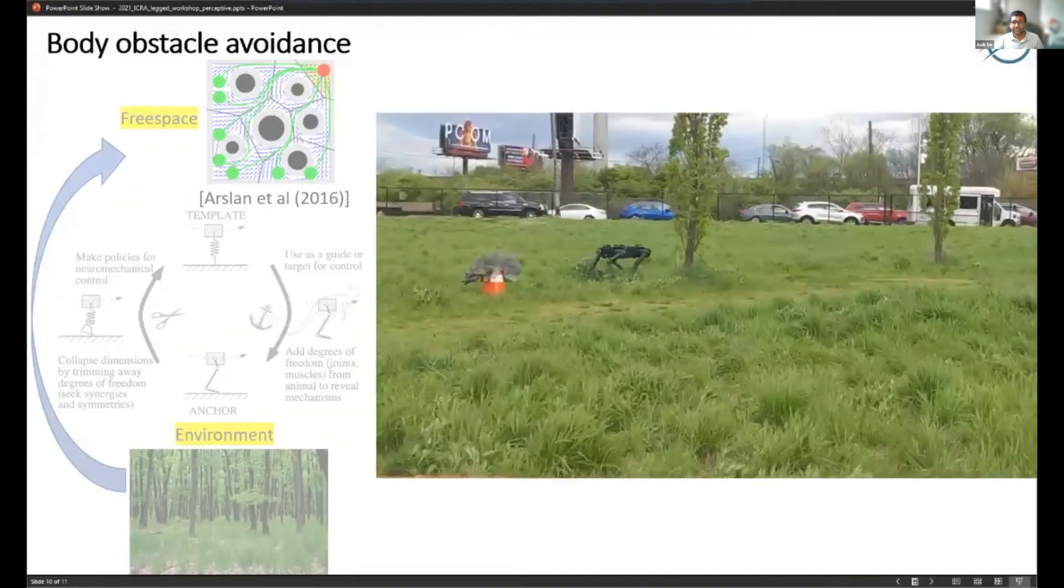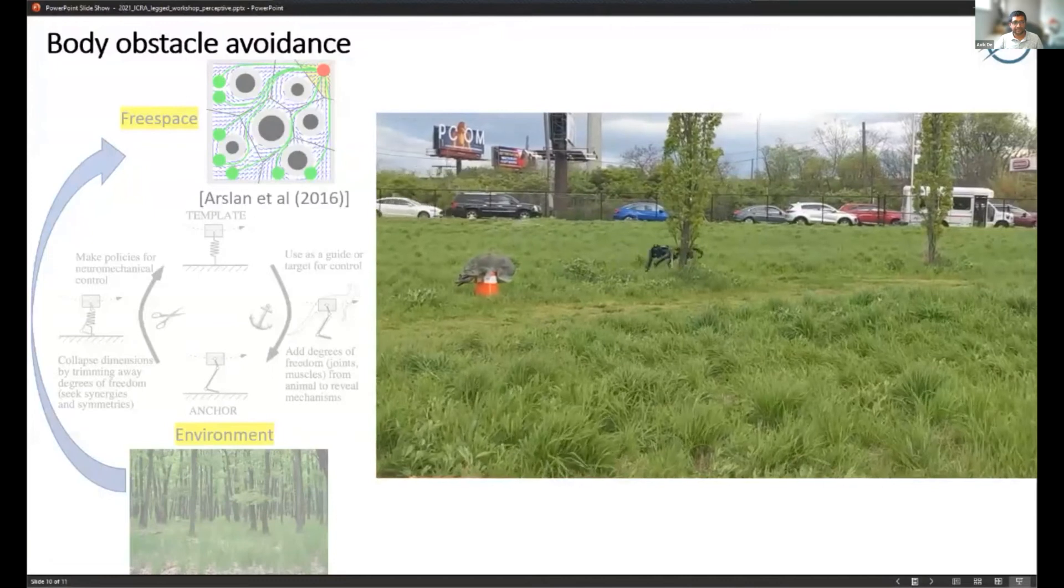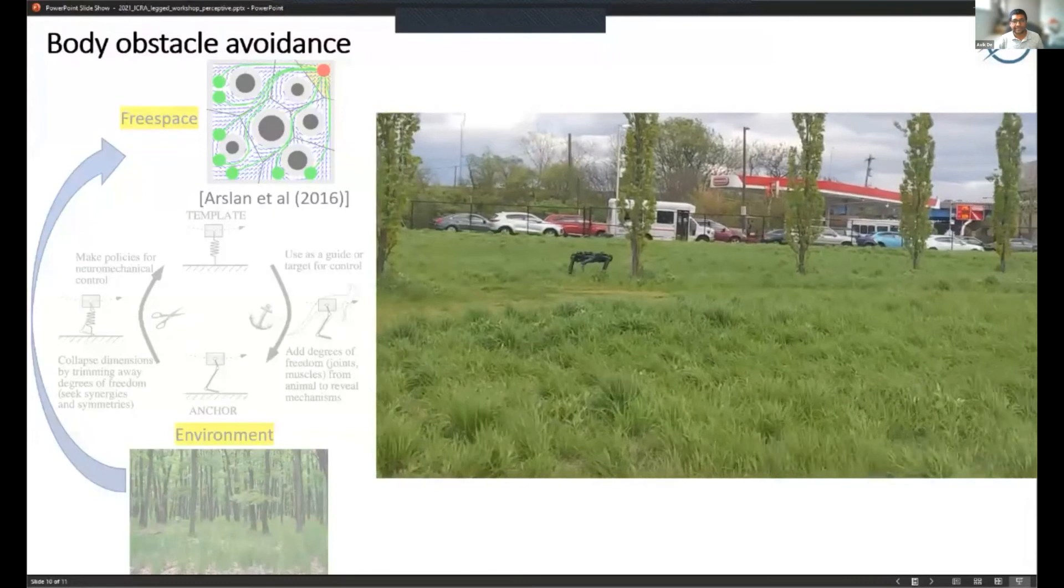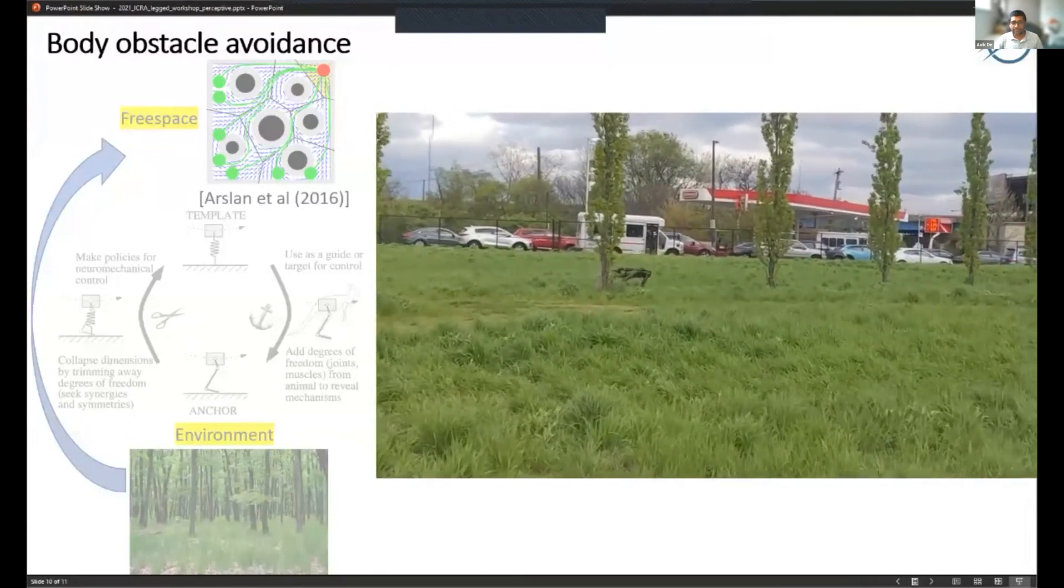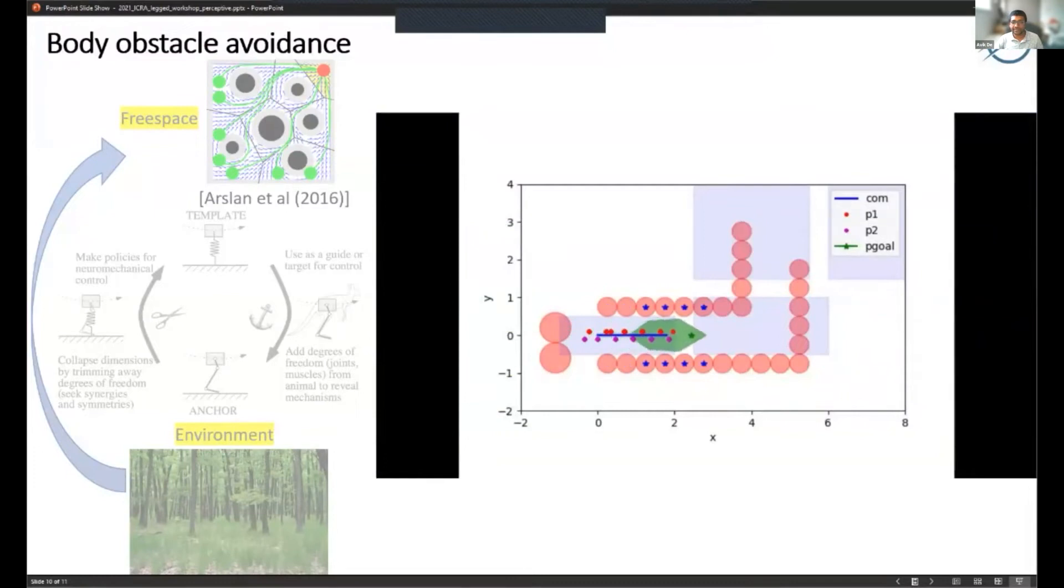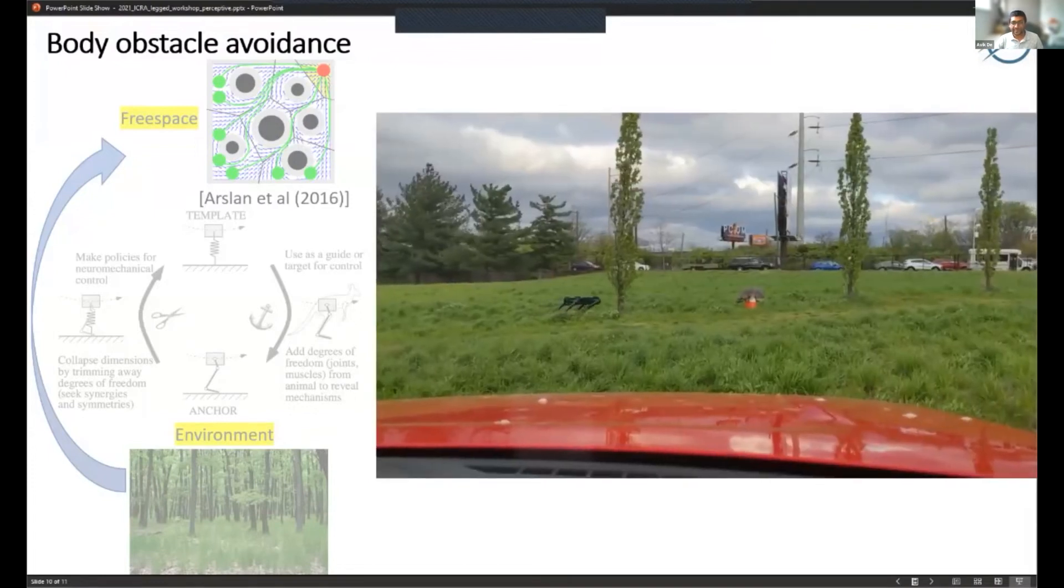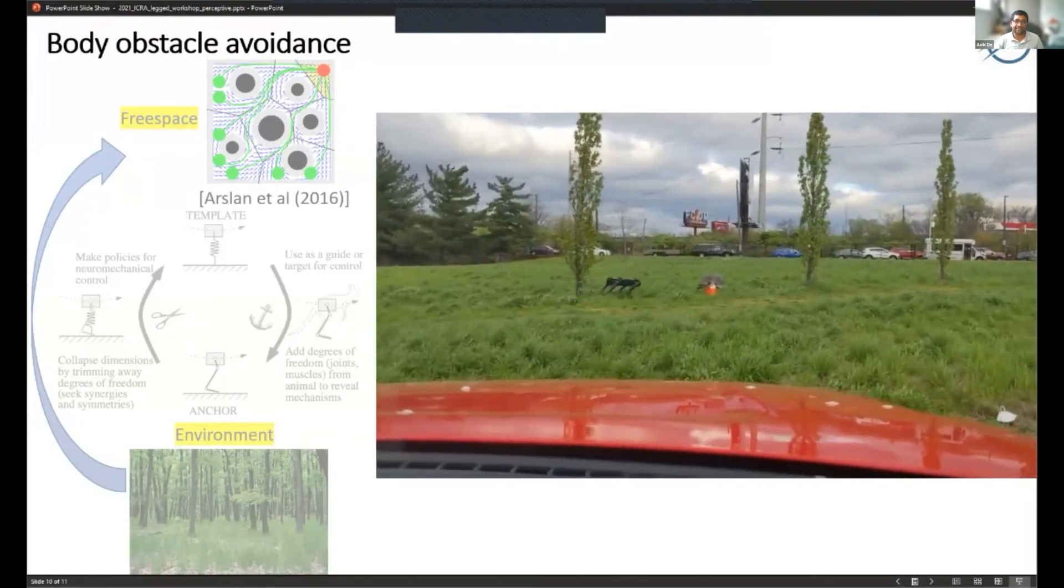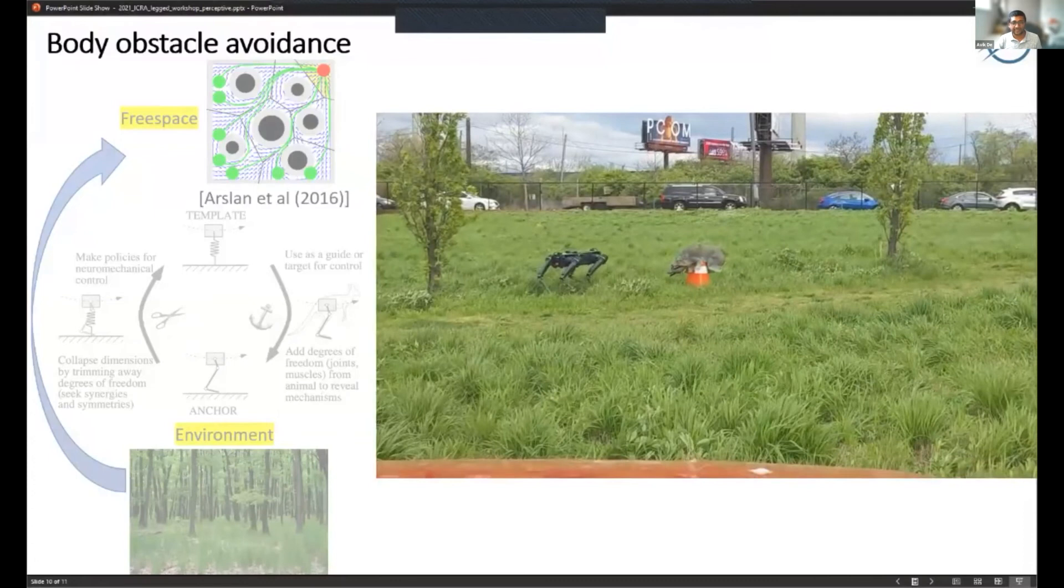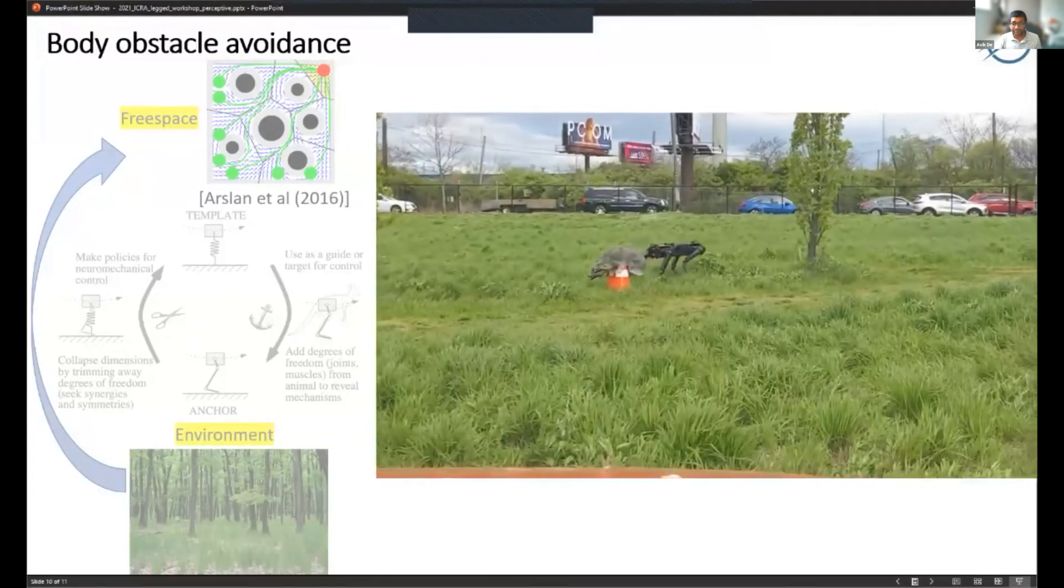But we definitely need to think more about exactly if we're going to use point particle models or unicycle models or what kinds of models are most suitable for the robot's dynamics. For now, the robot speeds are sufficiently low that we can get away with point particle models. But if the robot needs to navigate obstacles while moving very fast, it might need other kinds of template models, and correspondingly we'll have to figure out how to project the environment into those cases appropriately.